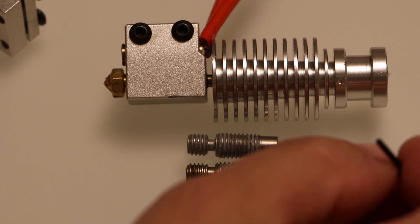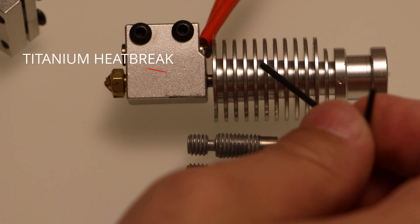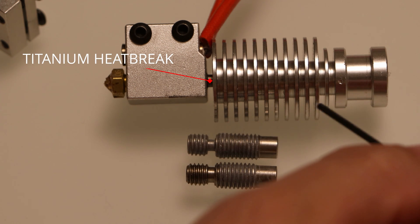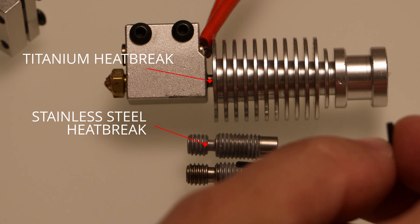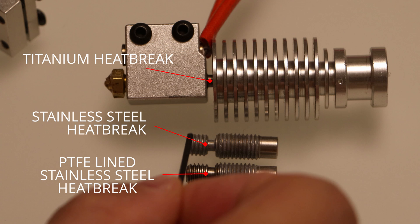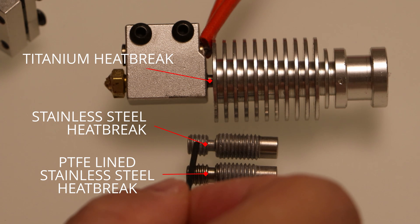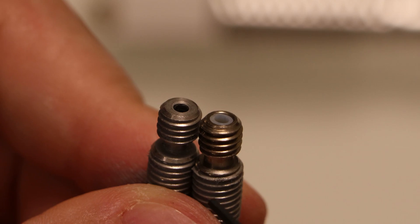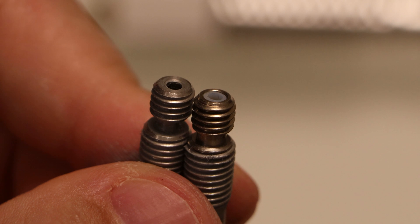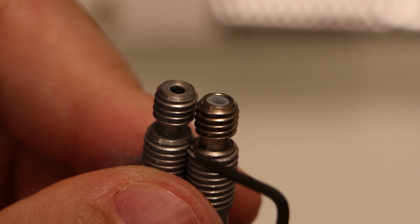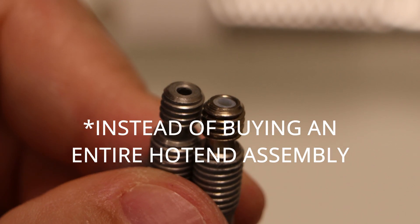So here I have a couple different types of heat break. The one installed in this hotend is an all-metal titanium heat break. This one right here is a stainless steel all-metal heat break, and this one is a PTFE lined stainless steel heat break. You can tell the difference between these two by noticing that the all-metal heat break has a narrower heat break section than the PTFE lined one. And this component determines whether you have an all-metal hotend or a PTFE lined hotend. That's why if you're looking for an all-metal hotend, I recommend just changing out the heat break as the cheapest solution.